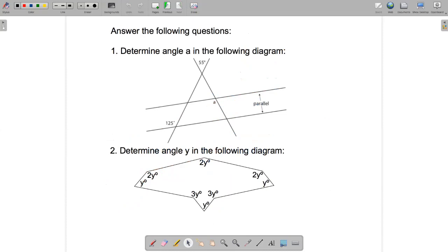So there's a couple of questions based on some of the ideas we just looked at. Question one, I want you to determine angle A in this diagram. So we've got two parallel lines. We've got 125 degrees down here. We've got 55 degrees up here. So do a little bit of mathematical sleuthing to figure out what A is equal to. It's kind of similar to the last example we looked at. You're going to have to solve a few steps to figure out what A is equal to.